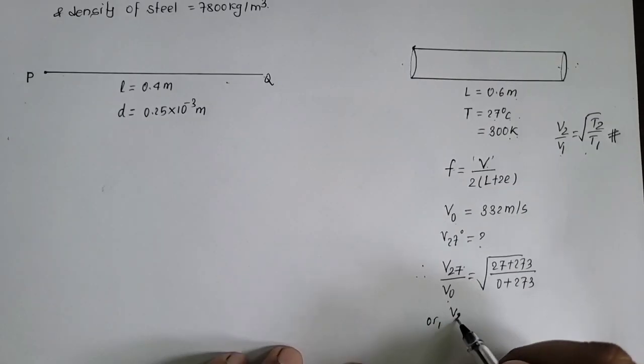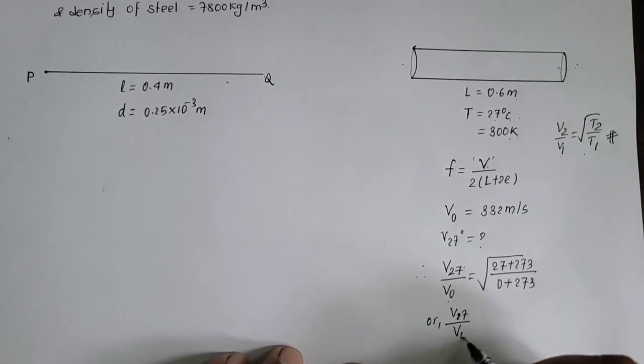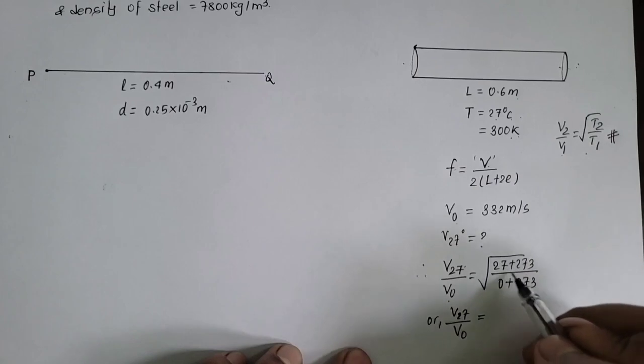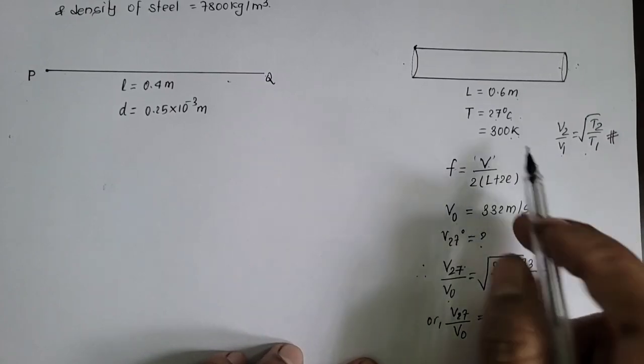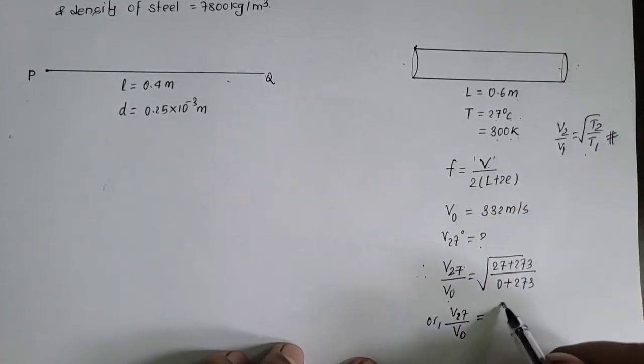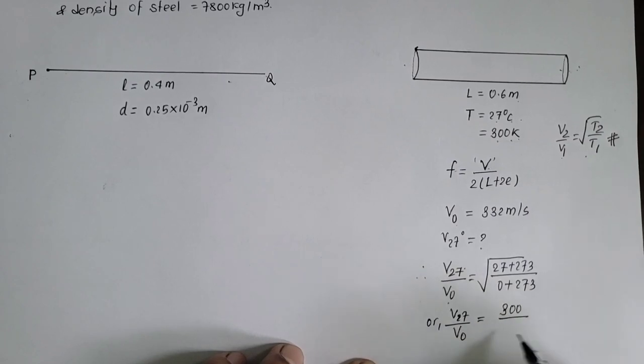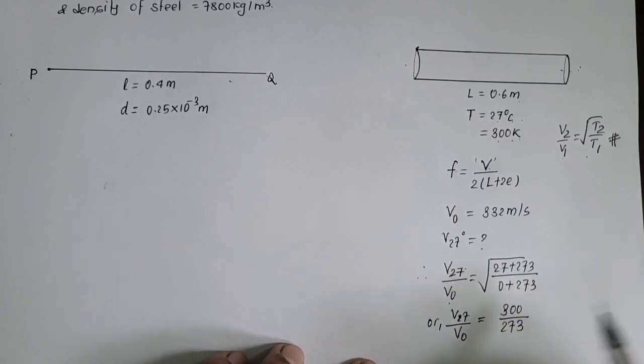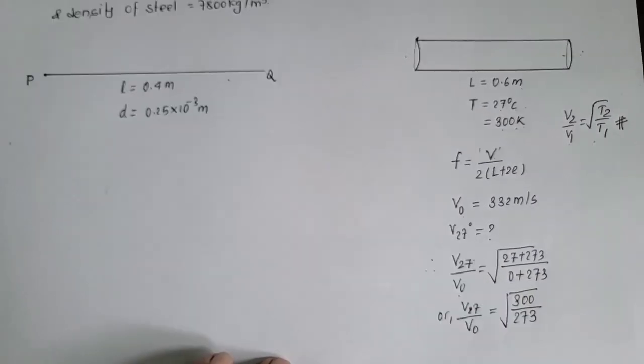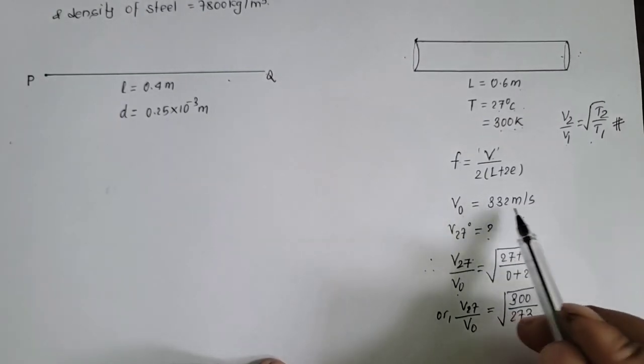Oilikol agi V27 by V0 0 degree celsius equal to 273 plus 27 already nikali sahagasun ayesko value uncha 300 kelvin by 0 degree celsius means 273 kelvin. Ayesko value uncha V0 ku value deekuusa 332 meter per second.